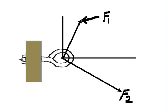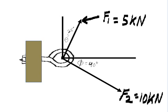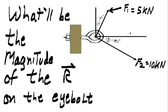There are forces F1 and F2. Theta is 25 degrees, V is 40 degrees, F1 is 5 kN, and F2 is 10 kN. What will be the magnitude of the resultant on the eye bolt?